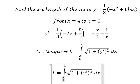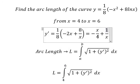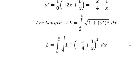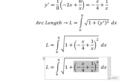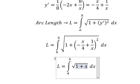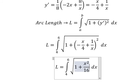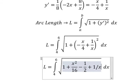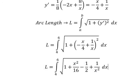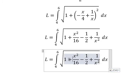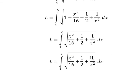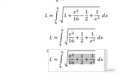Now we need to expand this one. We have x squared over 16 plus 1 over 2 plus 1 over x squared dx. We have positive 1 over 2, and this one that is about identity.